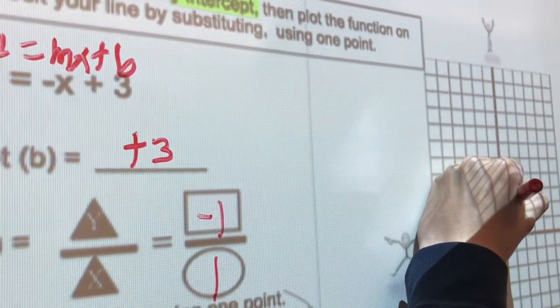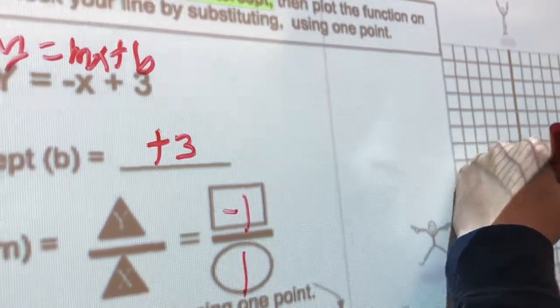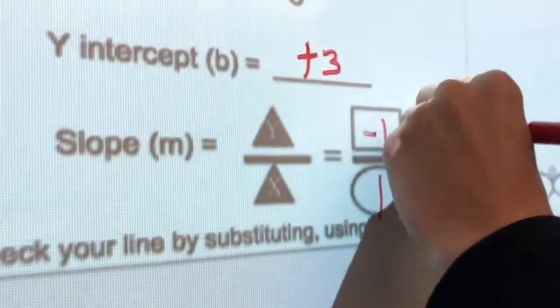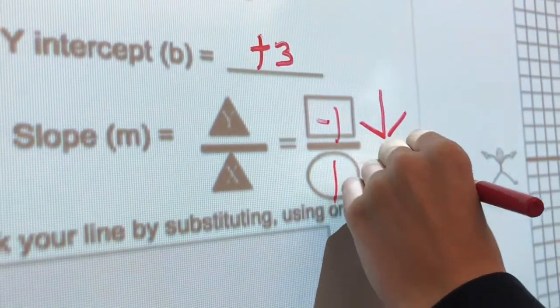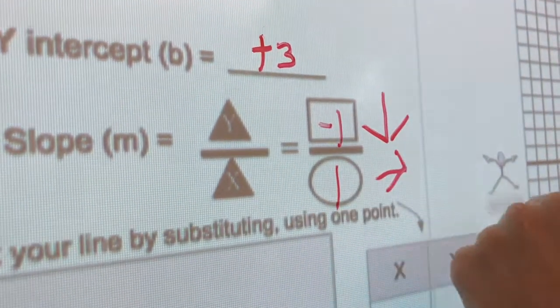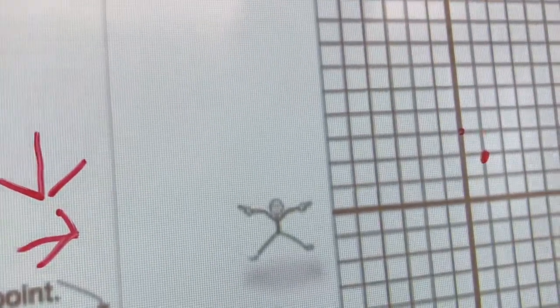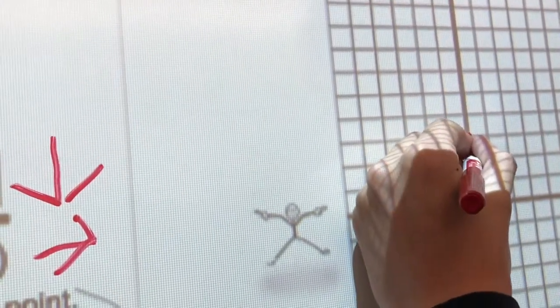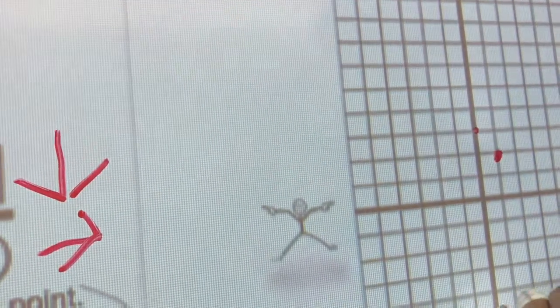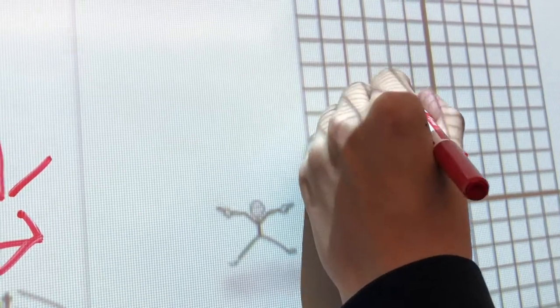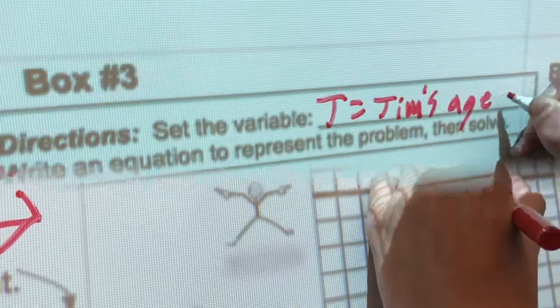So you're going to go down 1 and then over 1 and plot here. All right, show me what you're doing on the fraction right here. You're going to go down and then over. Okay, so you're going to begin at the 3 and then you're going to follow those directions. So show me again what you did over here on the graph. I went down 1 and then over 1. Okay, and then what do you do to use those two points? You draw a line. Looks good.